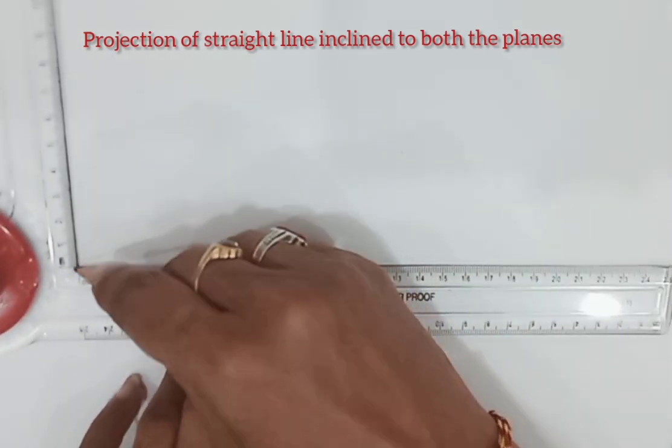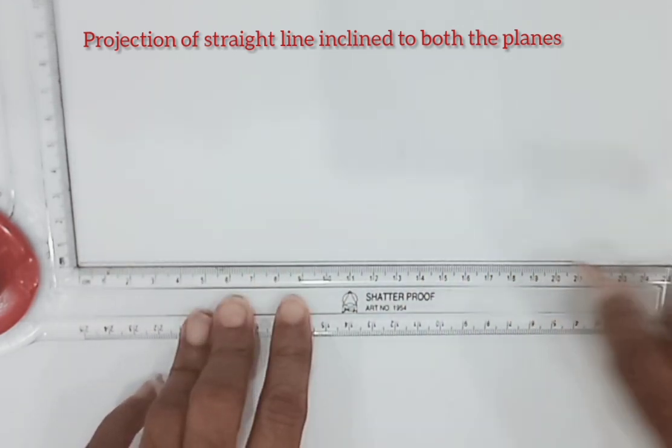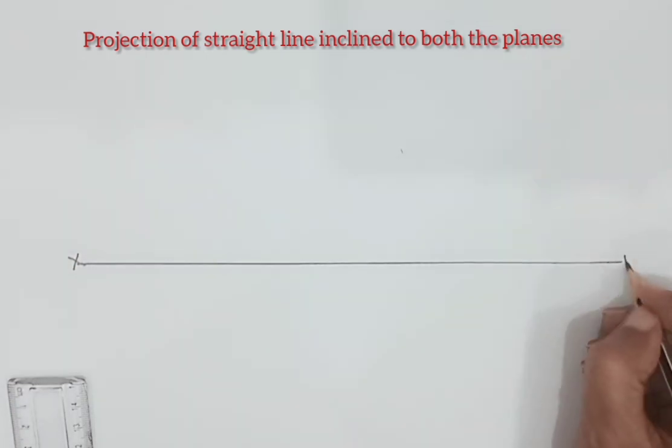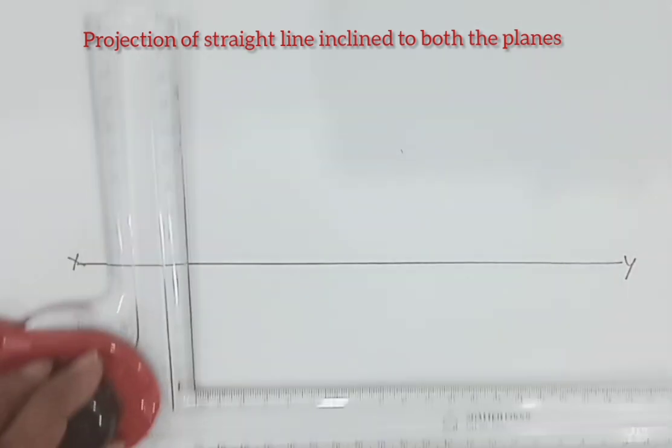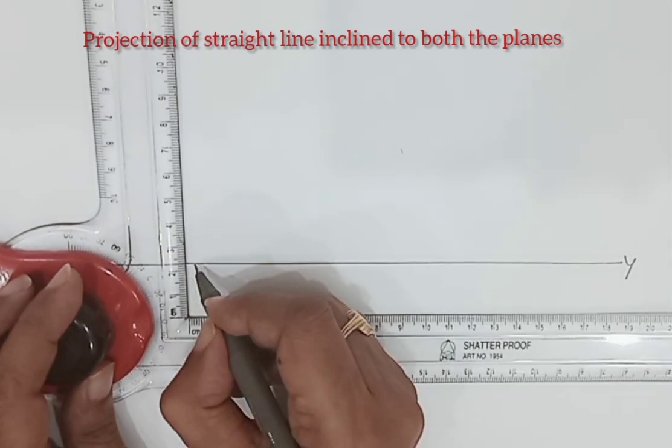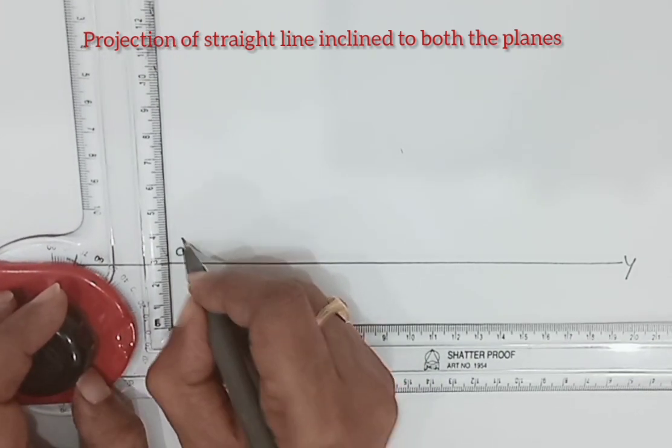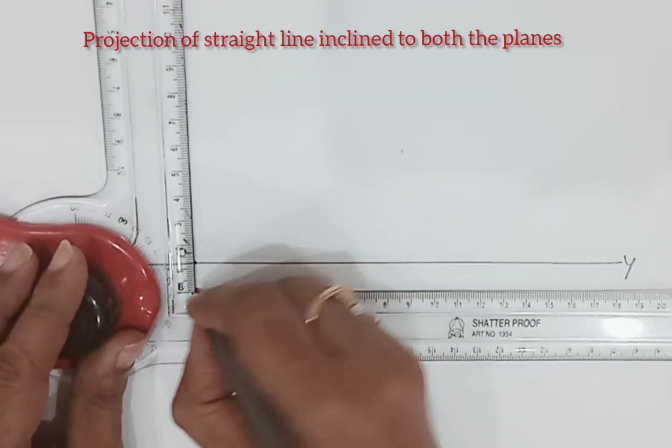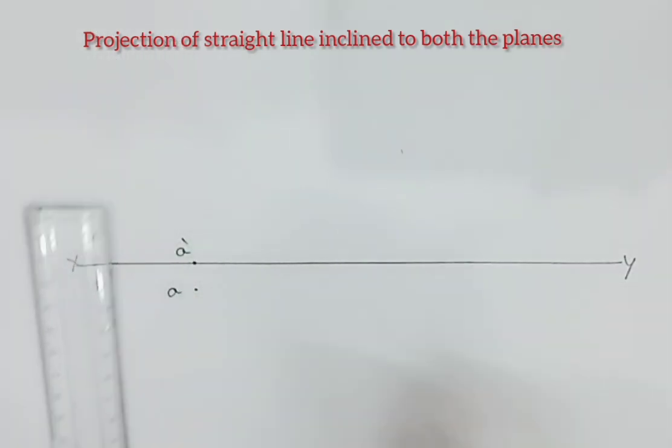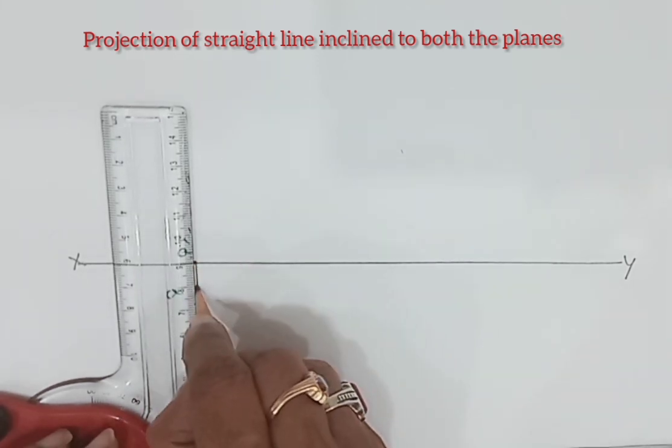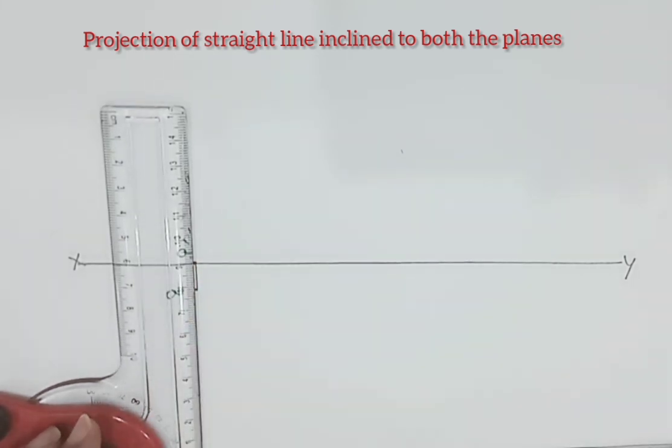As a first step draw XY line and then locate point A dash as well as A. After that, front view length is 50 mm.